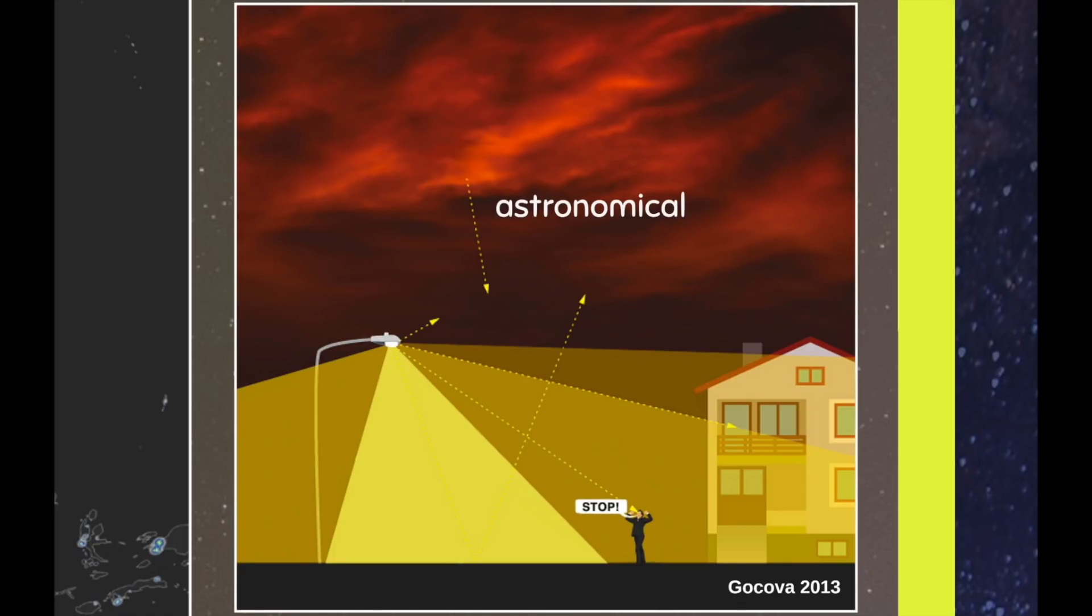This is of course a huge bummer for astrophysicists and amateur astronomers, but there's also another problem. It's called ecological light pollution and this is the impact of these local sources of light - street lamps, house lights, cars, etc. - billboards even, on species on the ground.